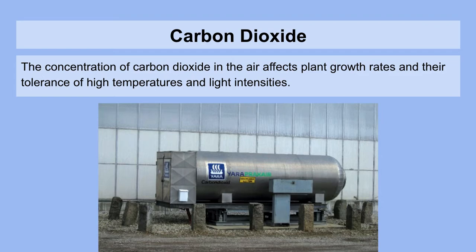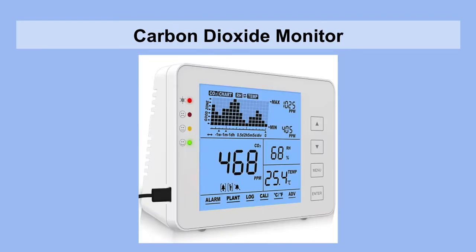Carbon dioxide is usually of little concern within most greenhouses, but the plants do use it for growth. So in certain scenarios, you want to make sure that it's not being depleted, because the concentration of carbon dioxide in the air affects plant growth rates and their tolerance of high temperatures and light intensities. To keep track of that, you simply need a carbon dioxide monitor, which will tell you in parts per million where your CO2 concentrations are at a given place at a given time.